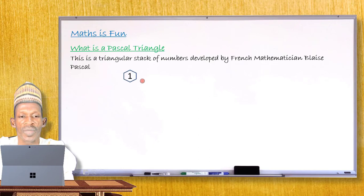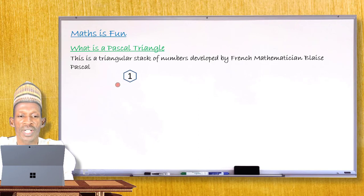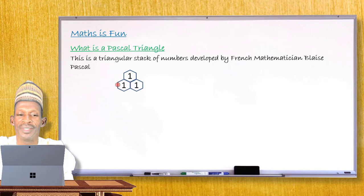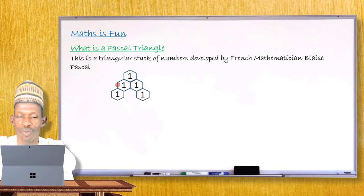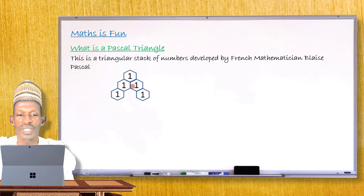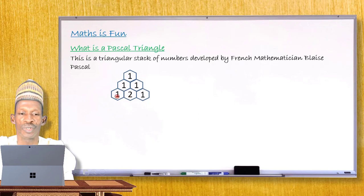In the very first row you have just one number. Moving to the second row there are two numbers, and the rule says you always begin with one and end with one — so the second row is: 1, 1. In the third row there are three numbers, again starting and ending with one. The middle number is found by adding the two numbers above it: 1 + 1 = 2. So the third row is: 1, 2, 1.